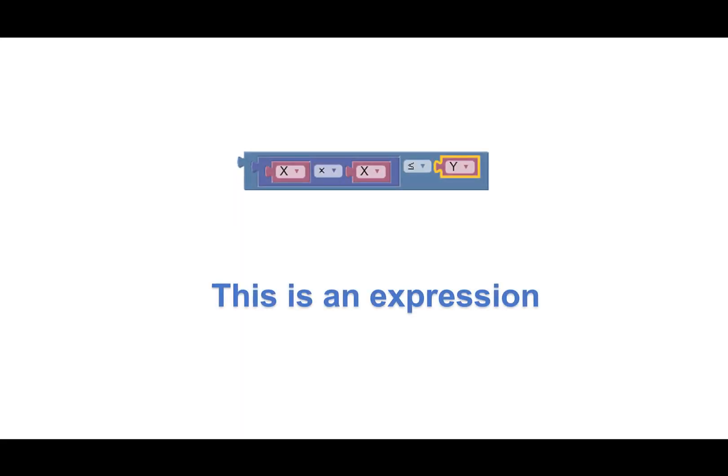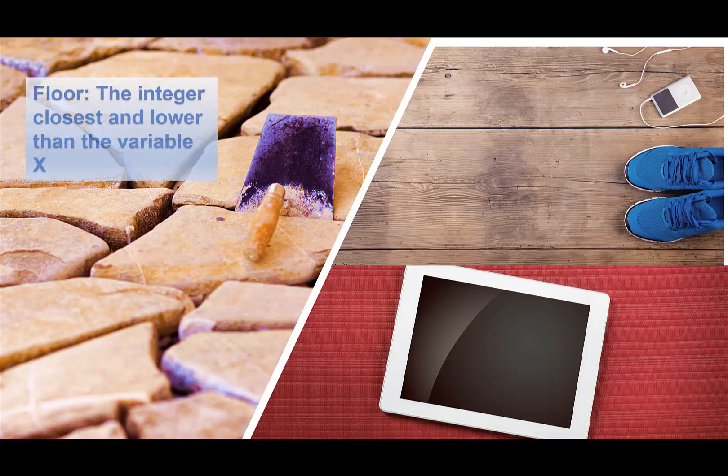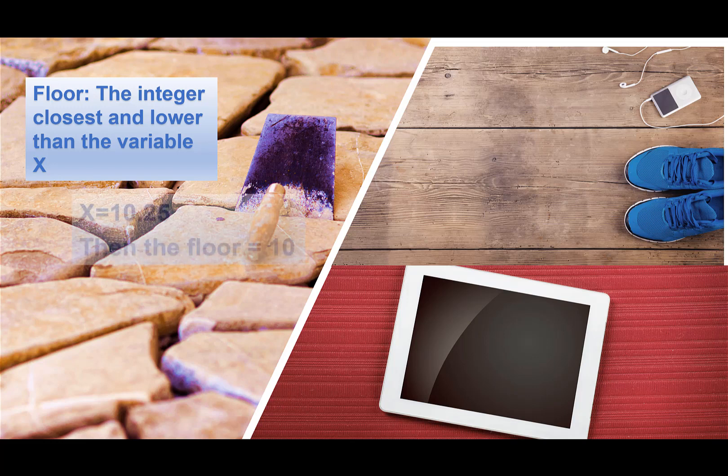Now the new variable will be defined by a floor. What's that? What's a floor? Wood, tile, carpet? The floor will give us the integer closest and lower than the variable X. For example, the variable X is 10.25, so the floor is 10.